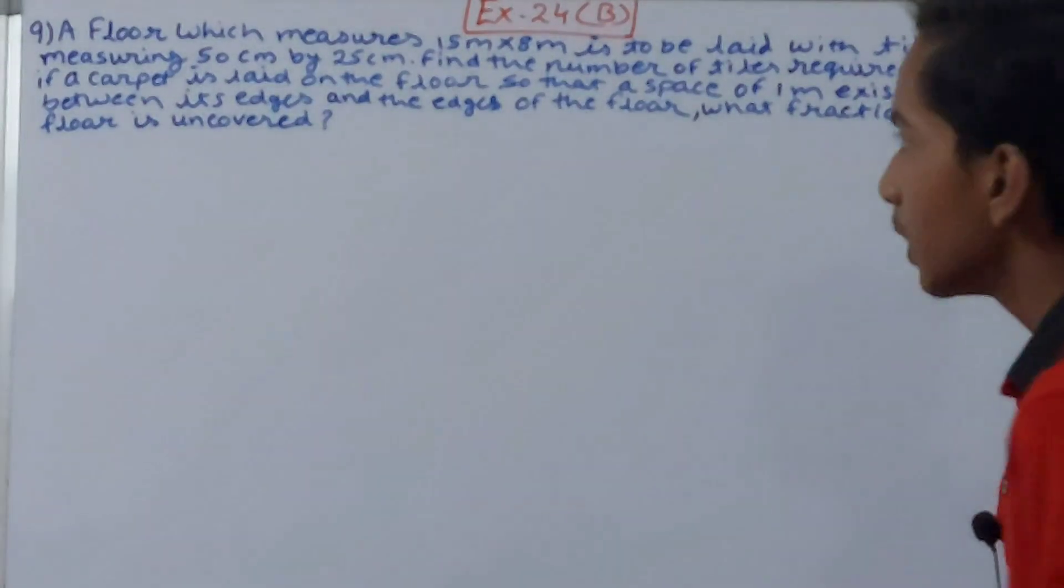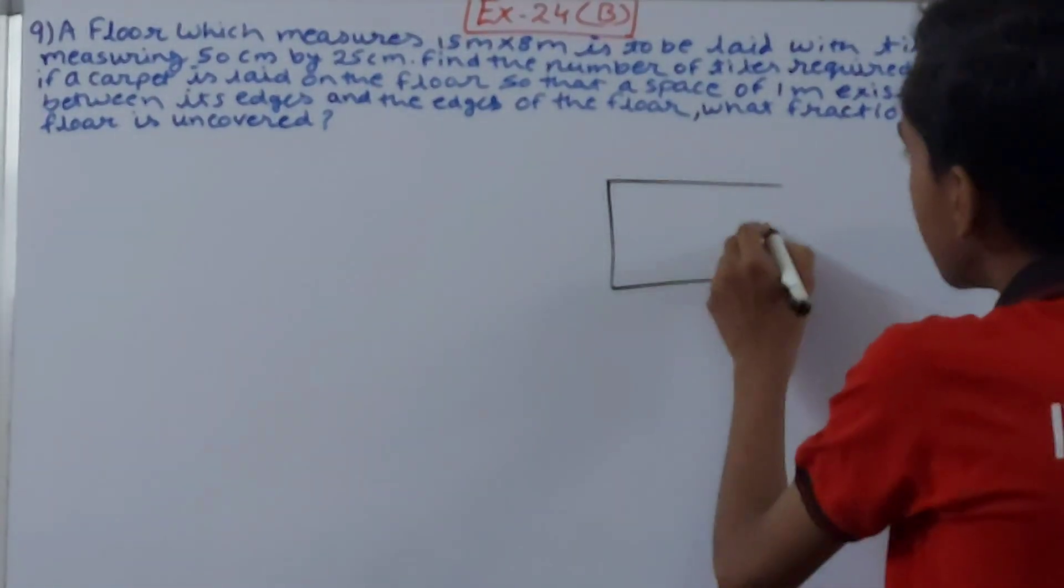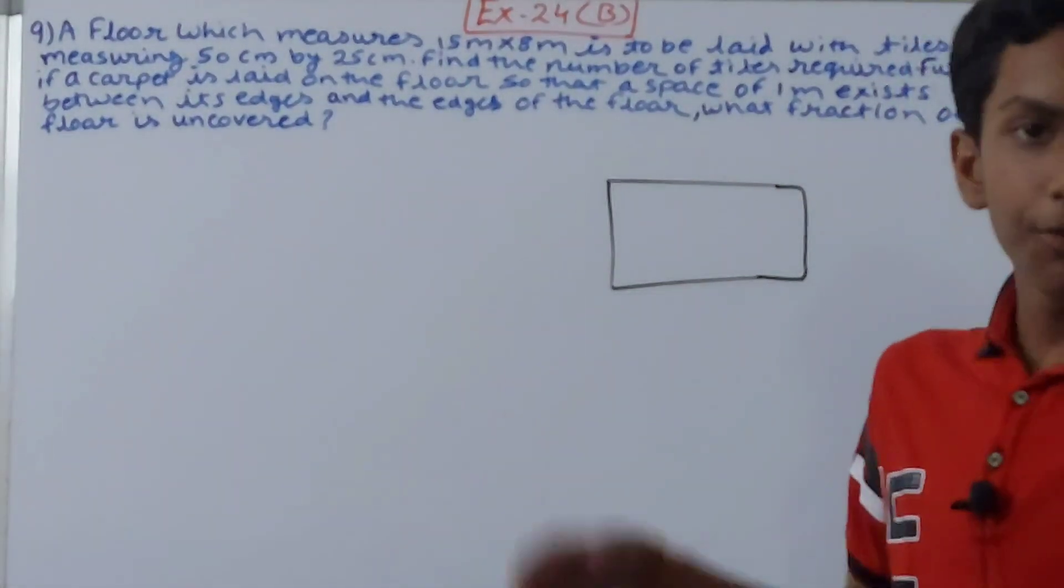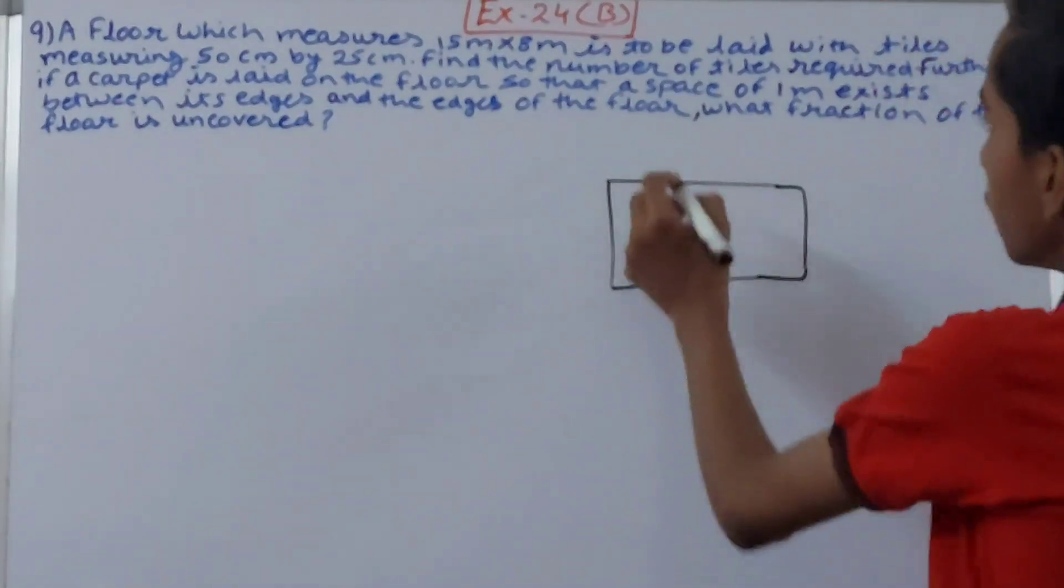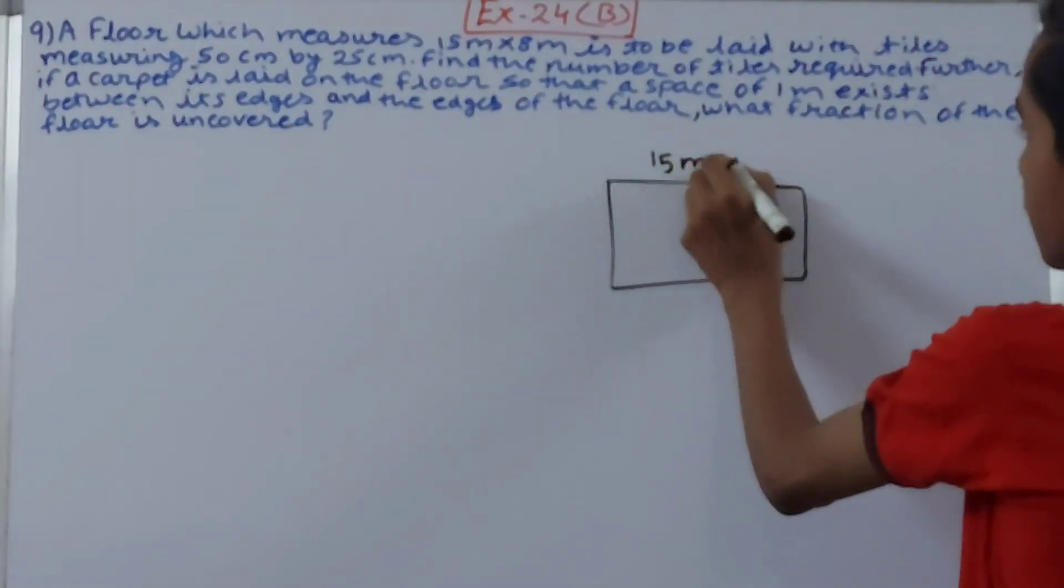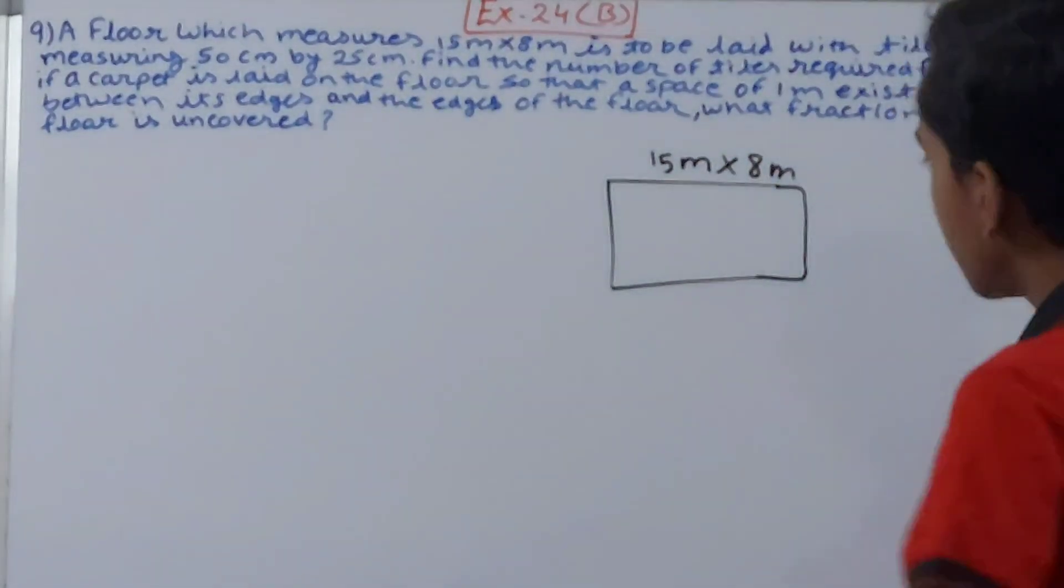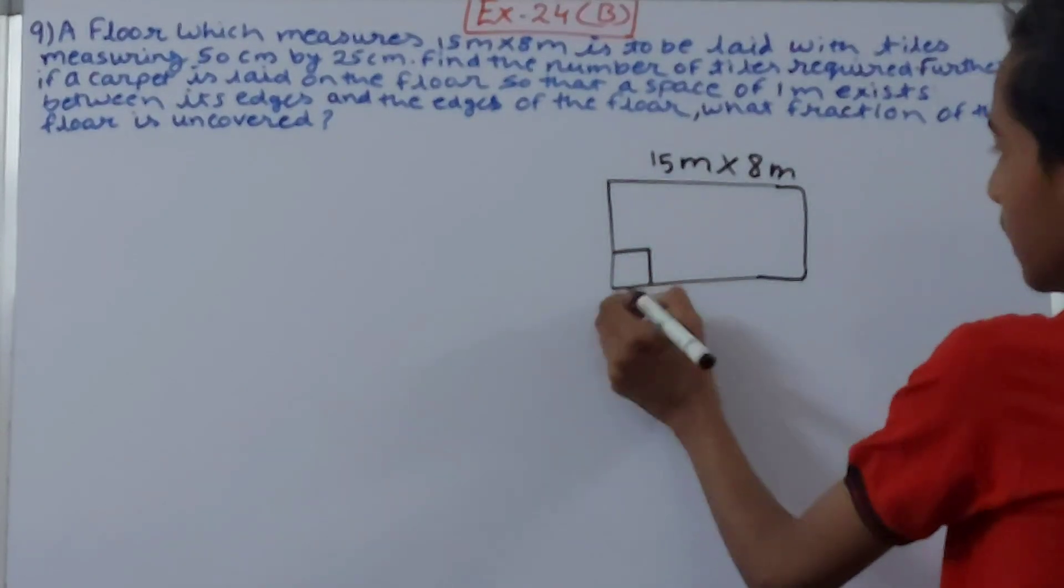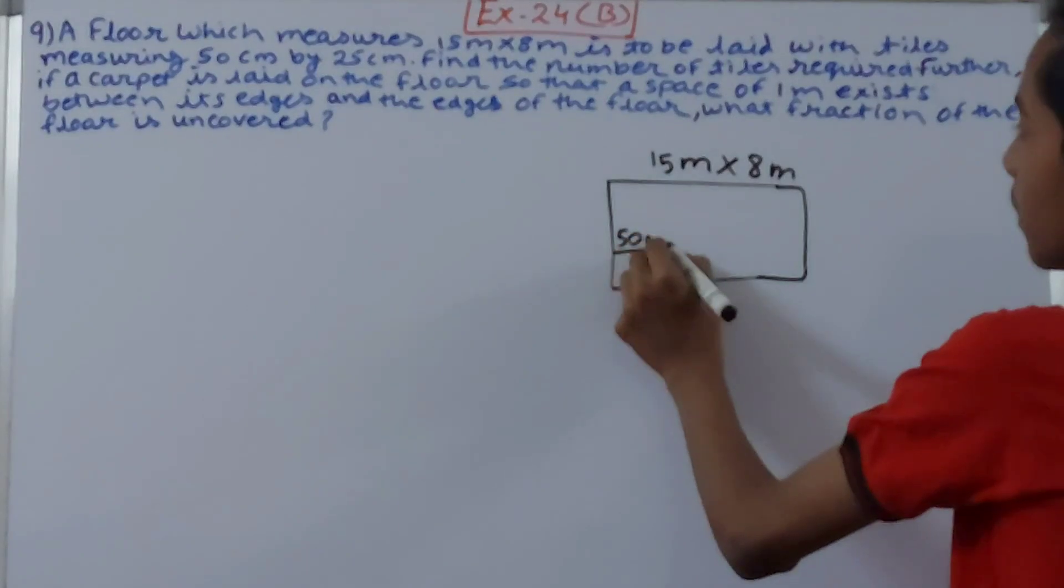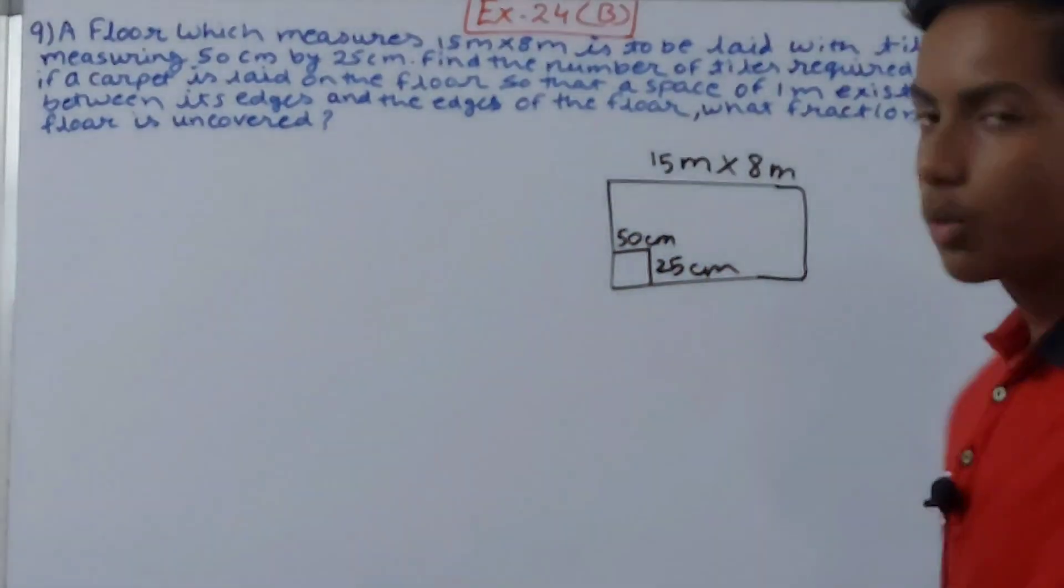This is the floor, let's say. This is my floor and on this floor we have to put tiles. One tile is 15 meter - sorry, the area of the floor is 15 meter by 8 meters. And the tile, so like this is the tile. The tile is 50 centimeters by 25 centimeters. So we have to put the tile.